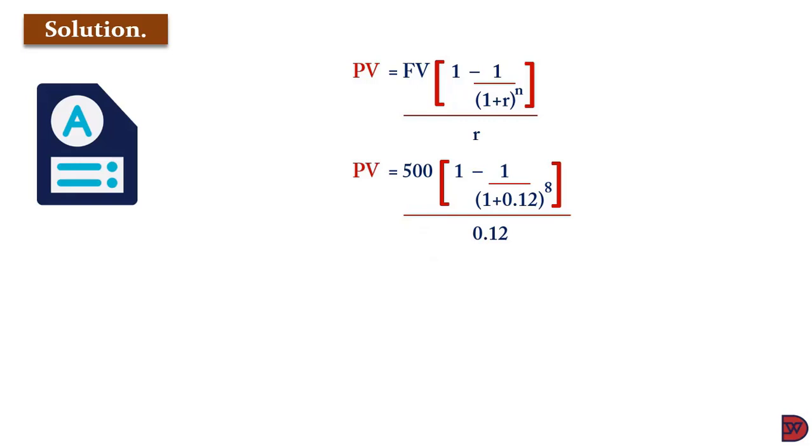Minus 1 divided by (1 plus 12%) raised to the power of 8 years, divided by the rate which is 12%. Which will give you $500 multiplied by 4.968.